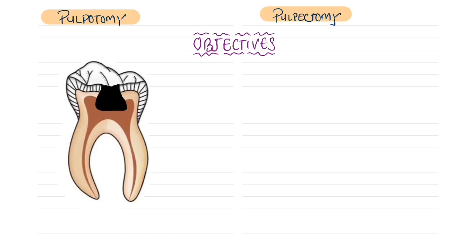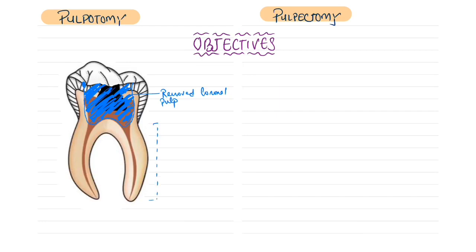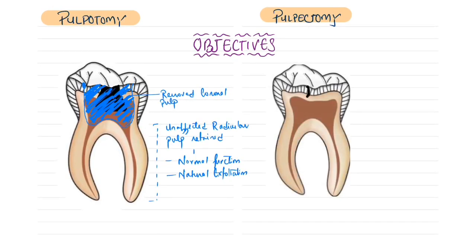Now, the objectives of pulpotomy and pulpectomy: in pulpotomy, when there is inflamed, affected, or infected coronal pulp tissue, we remove this coronal pulp tissue while retaining the unaffected radicular pulp tissue. The aim is to attain the normal or natural function of the tooth and at the same time promote natural exfoliation of the tooth.